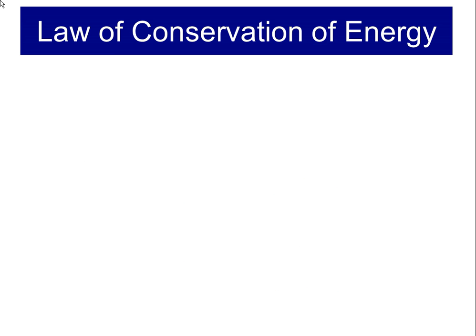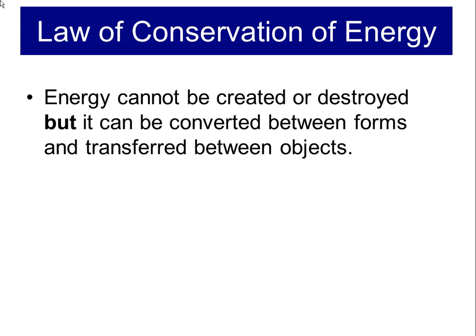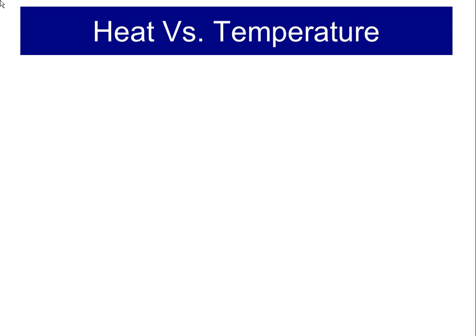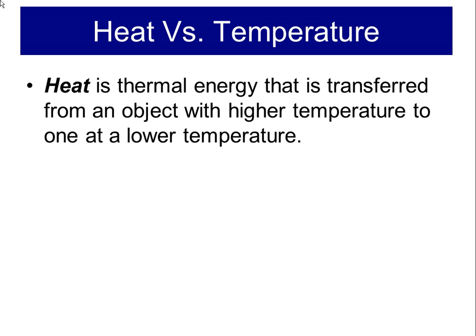The law of conservation of energy: just like we can't create or destroy matter, we cannot create or destroy energy — we can only convert it between forms or transfer it between objects. When energy is transferred between objects, that energy is in the form of heat, or what we call thermal energy. Heat is thermal energy that is transferred from an object with a higher temperature to an object with a lower temperature.